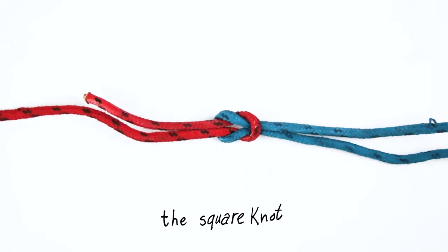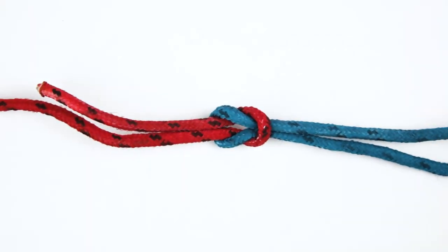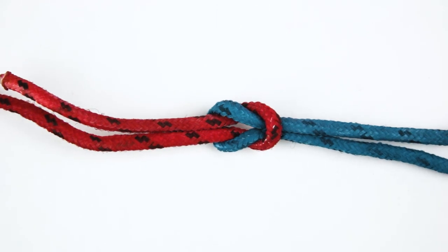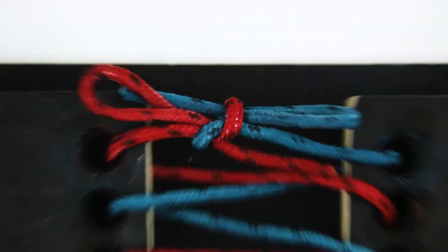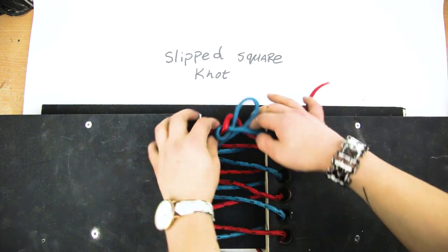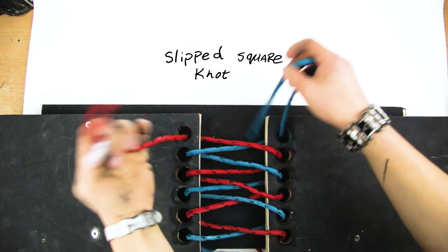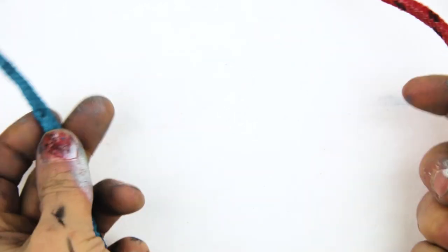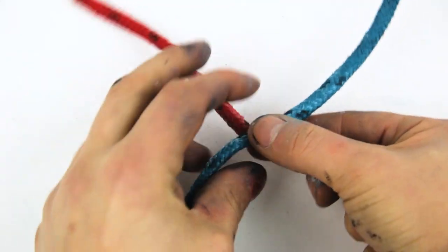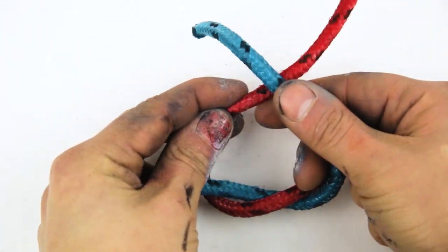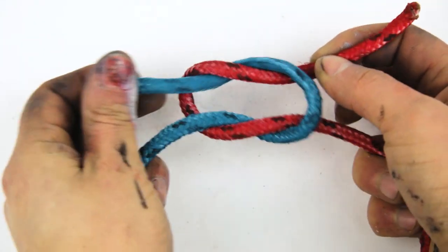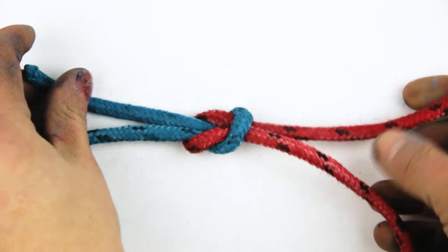The square knot is probably the one you're the most familiar with, because that's one element that's used when tying your shoes, which is called a slipped square knot. A square knot goes like this: left over right, wrap around, and right over left, wrap around. And it should look like a figure eight.